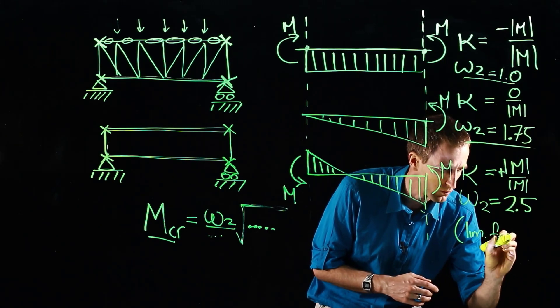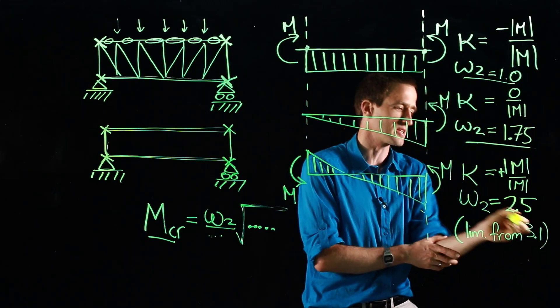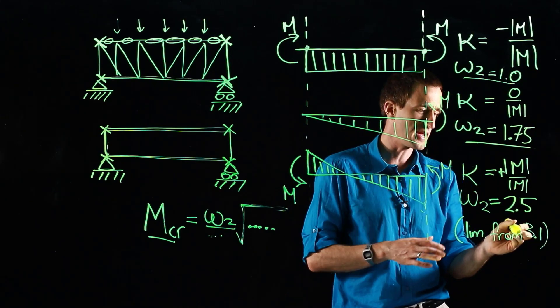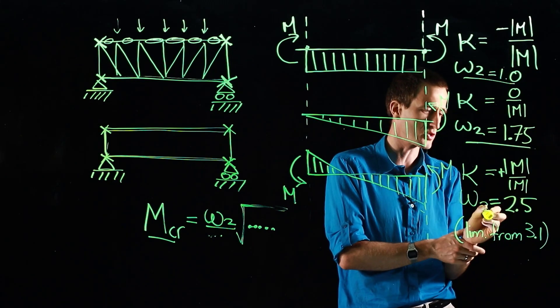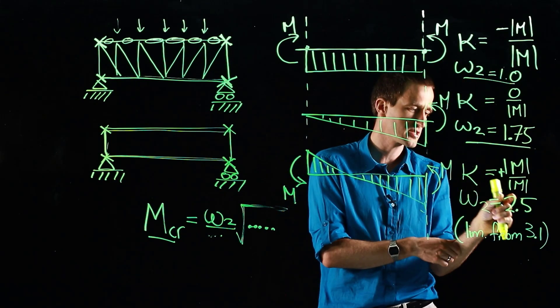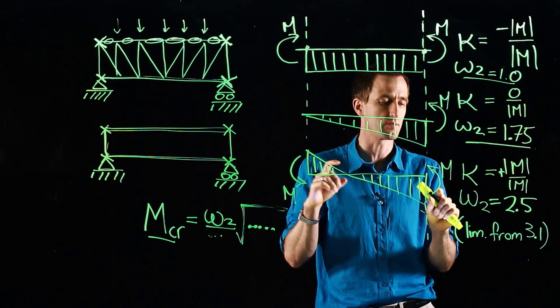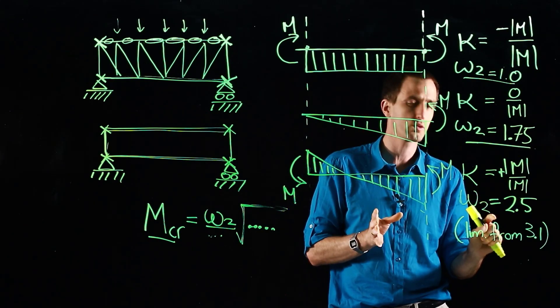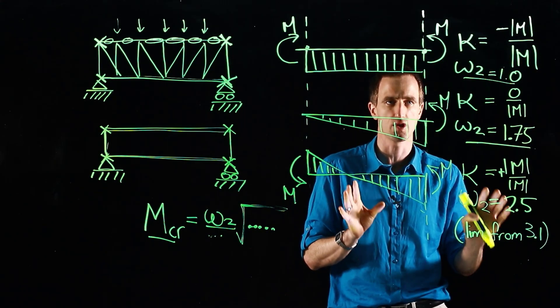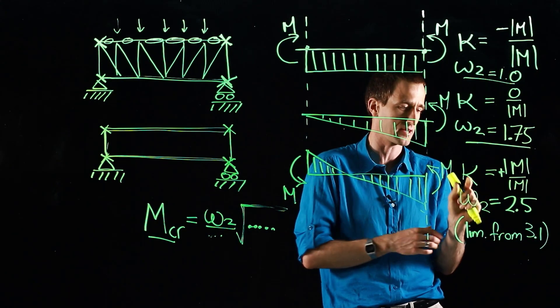From 3.1. If we ran the calculations we'd find it's actually 3.1 but then the code limits the value to 2.5. So that means our resistance has increased by 150 percent because of the shape of the bending moment diagram. That's why it's very important when it comes to the calculations to know how to apply this because it has a big influence on your buckling resistance.